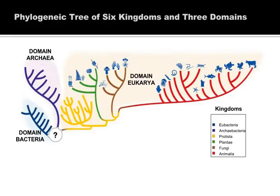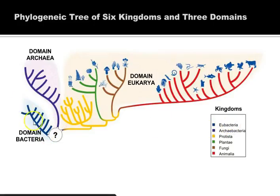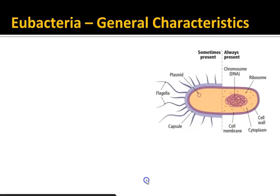Greetings, biology students. Mr. Mechnick here for a podcast on the eubacteria. We're talking about eubacteria — these ones right here in this branch on this phylogenetic tree. We're going to focus on general characteristics, how these things are able to feed and get their nutrition, and how they're able to do it. Stay tuned and we'll cover those pieces of information on this short little podcast.